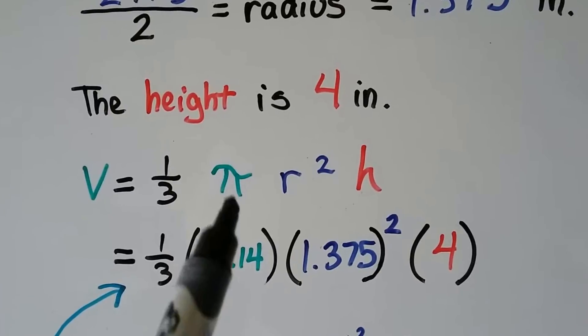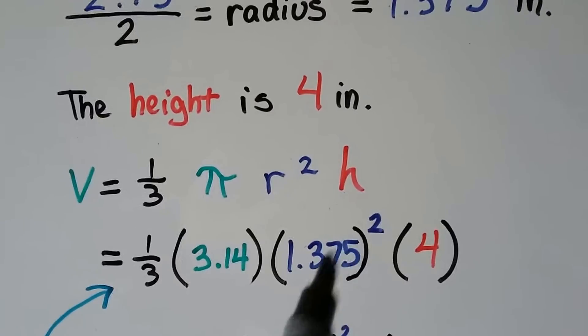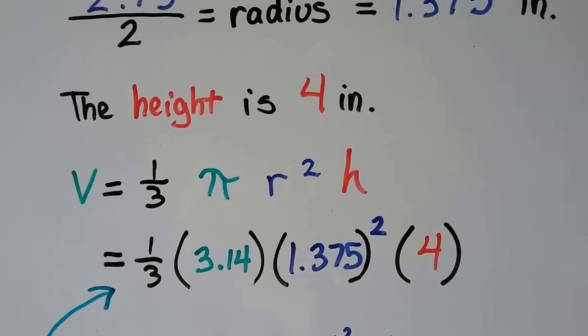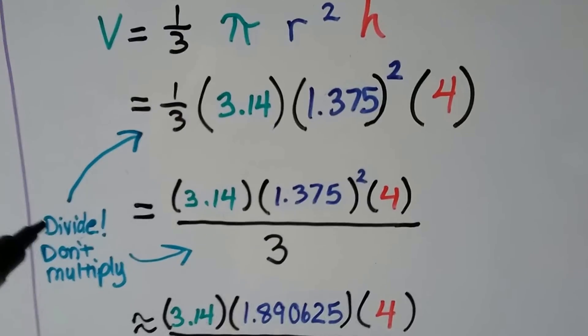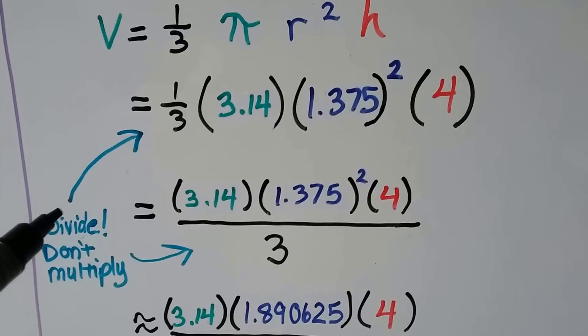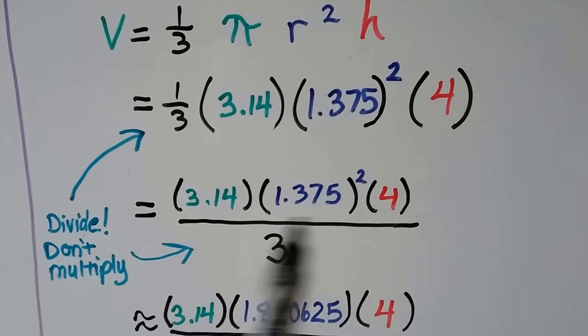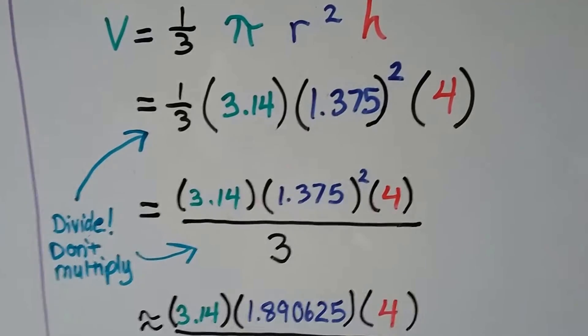We know 3.14 for the pi, the 1.375 squared for the radius squared, and the 4 for the height. We're not going to multiply by a third. We're actually going to divide later on, so don't multiply. So we can write it like this, so it's divided by 3, but we need to do the numerator first.